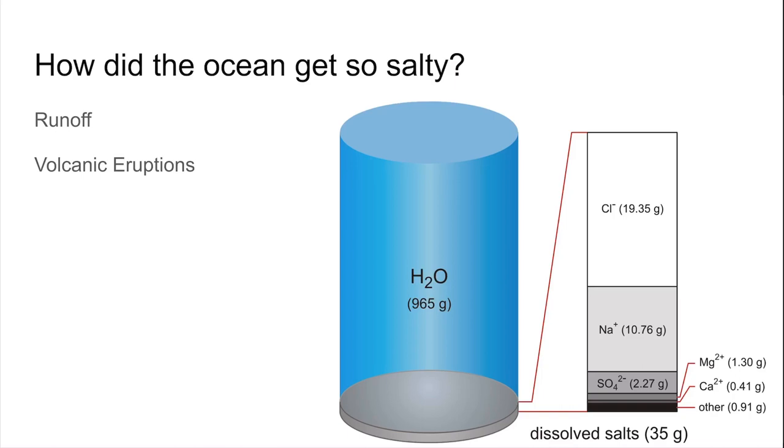On average, ocean water is 96.5% water and 3.5% salt. If you took a kilogram of water and boiled it off, you would be left with about 35 grams of sea salt. This is mostly made up of the mineral halide, sodium, and chloride, which makes up our common table salt.